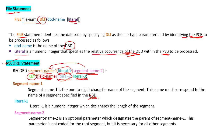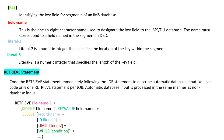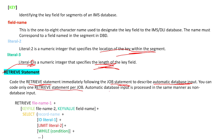The RETRIEVE statement must be coded immediately after the JOB statement to describe the automatic database input. You can code one RETRIEVE statement per JOB. Automatic database input is processed in the same manner as non-database file processing — it works the same way on the database as it does on a file.